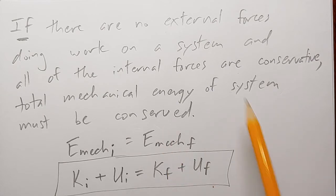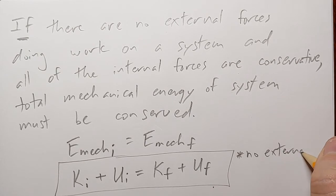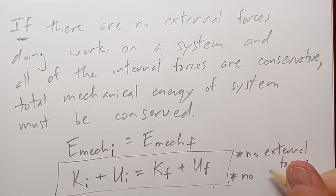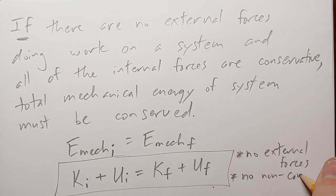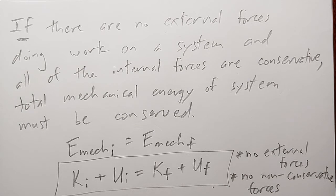This equation requires certain conditions to be true. Next to it, we can write the short version: no external force doing work — an external force perpendicular to the displacement that isn't actually changing the energy is fine, but there can't be an external force doing work — and no non-conservative forces. If both of those conditions are met, this conservation equation will be true.